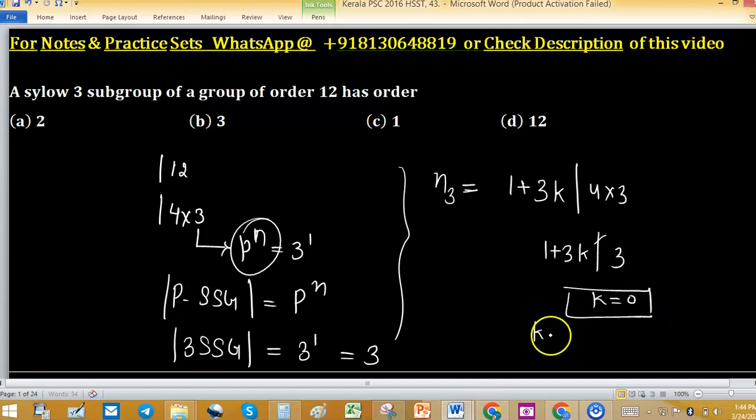So when k equals 1, the value of n₃ will be 4, and when k equals 0, the value of n₃ is 1. If any p-Sylow subgroup is single, meaning only one exists, then that Sylow subgroup is normal.